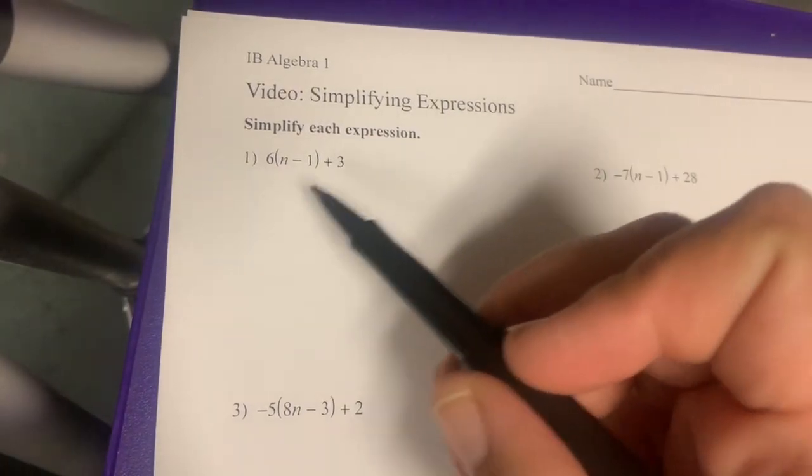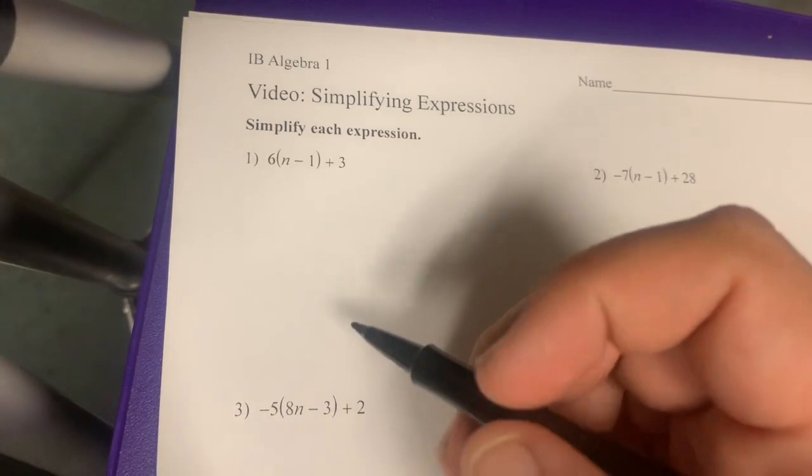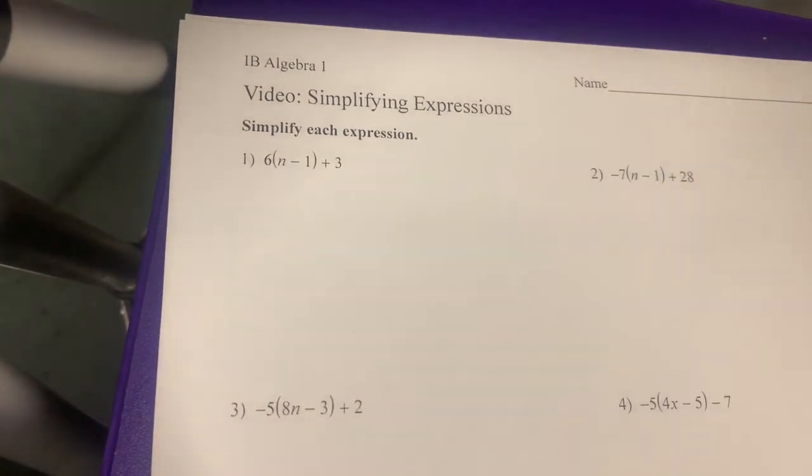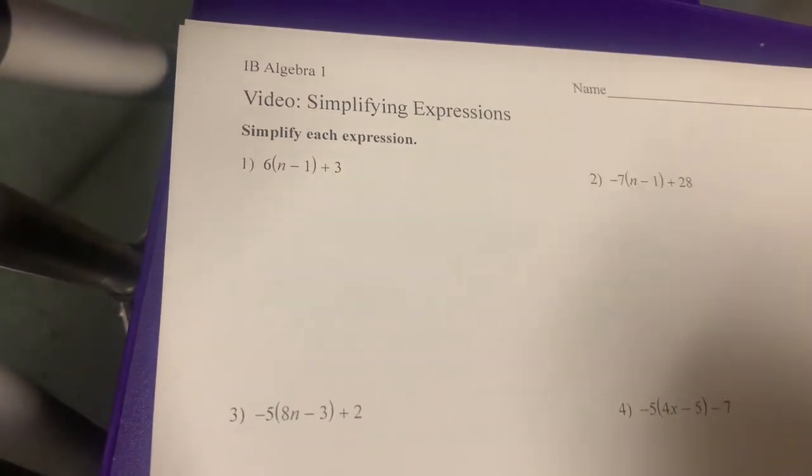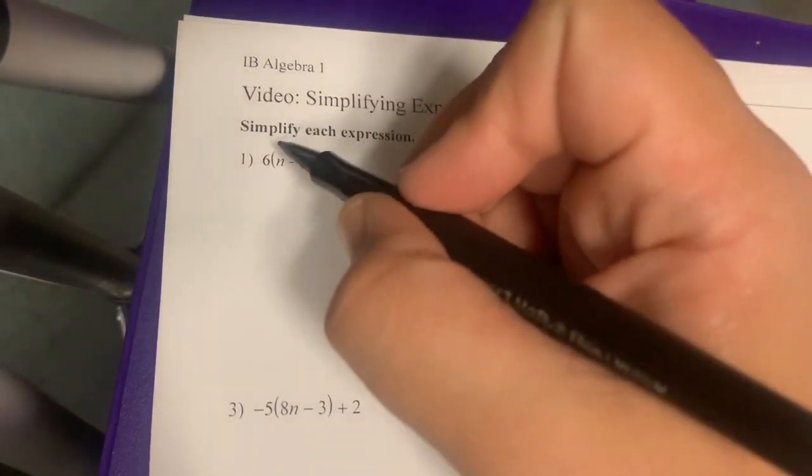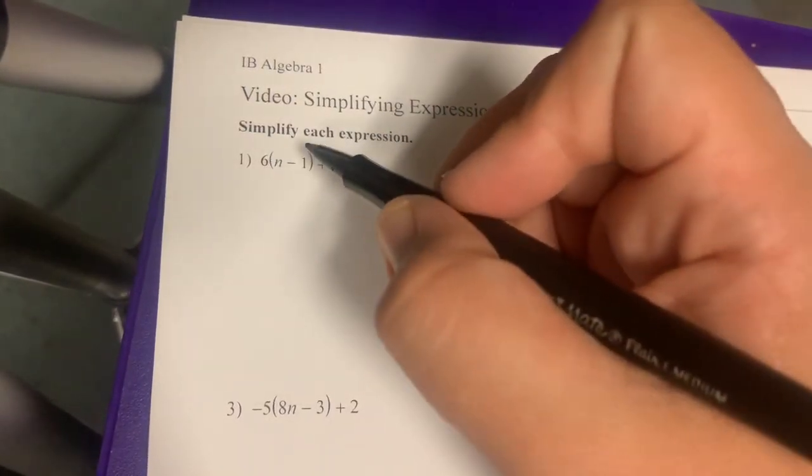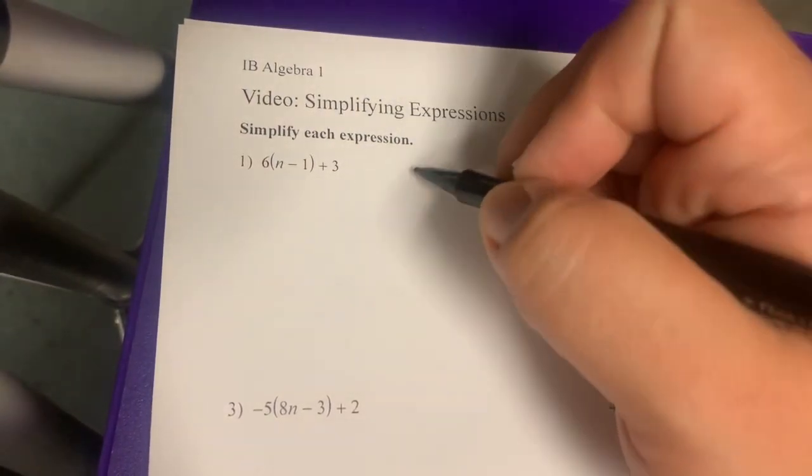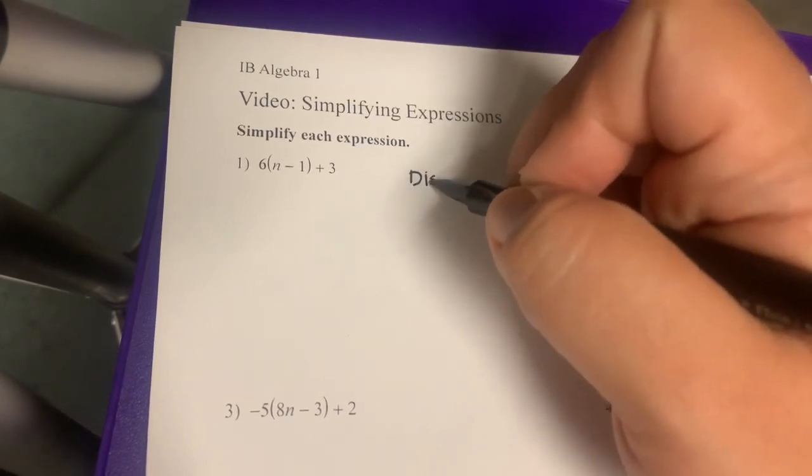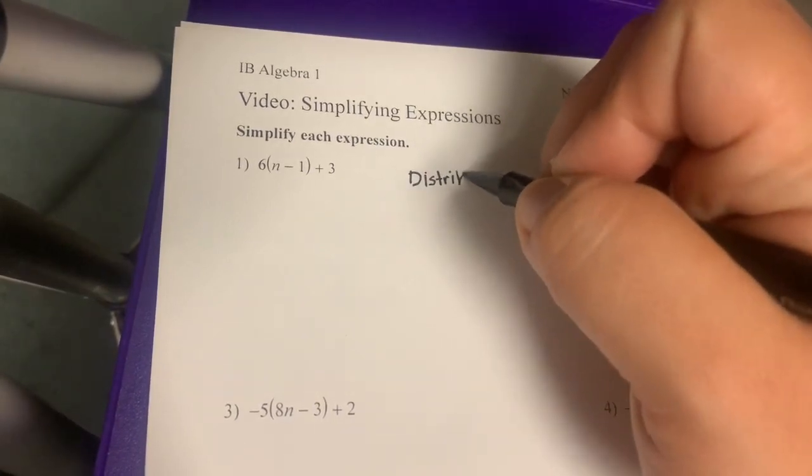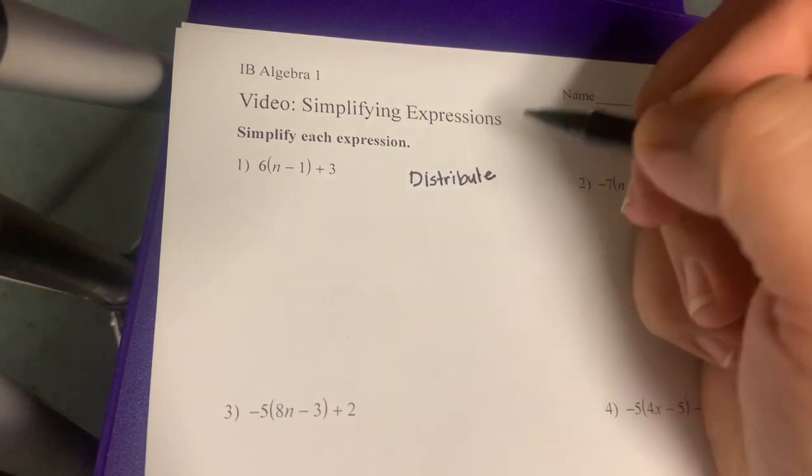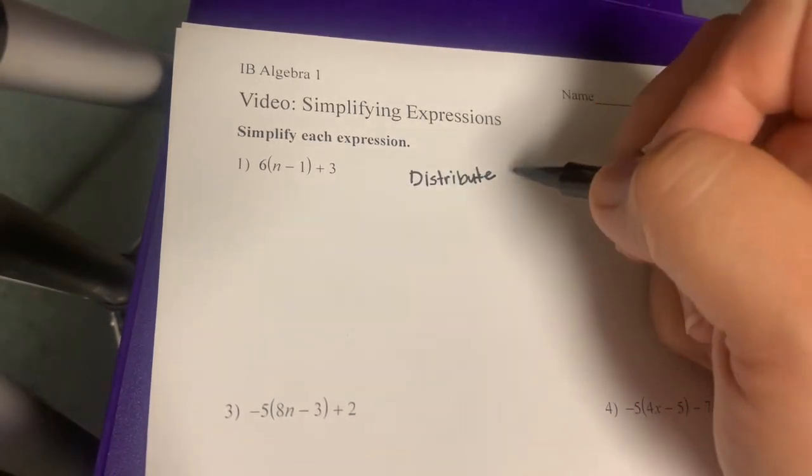...that means we're trying to clear up any parentheses, combine any like terms, and get it down to its simplest form. So what we're going to do first is take this 6 and multiply it through the parentheses to get rid of the parentheses. It's called using the distributive property, so the first thing we're going to do is distribute.